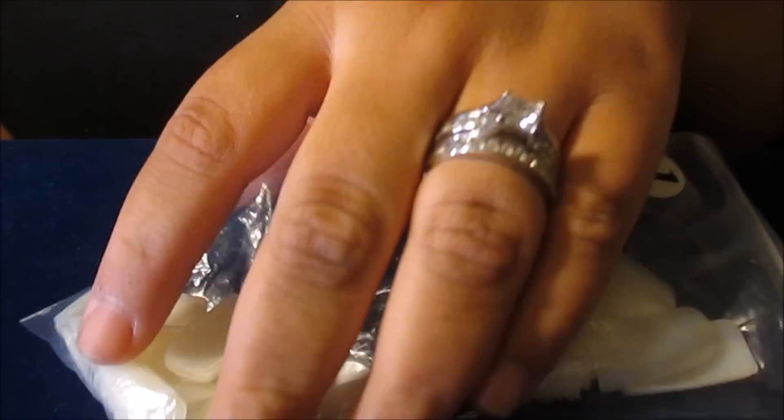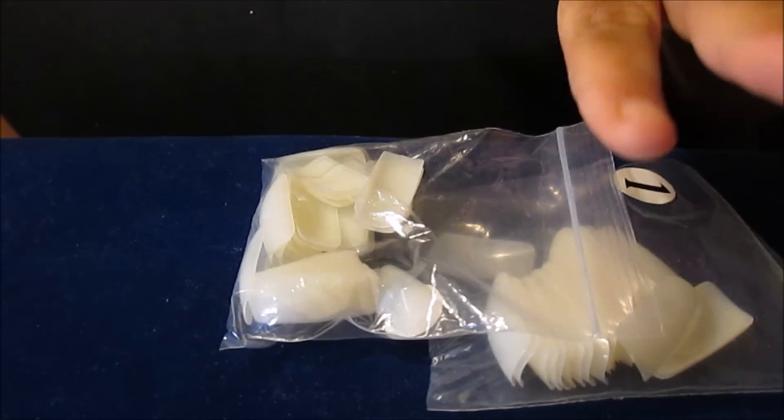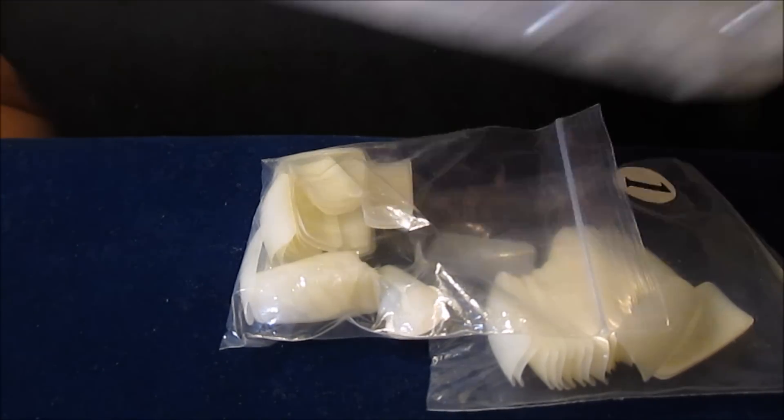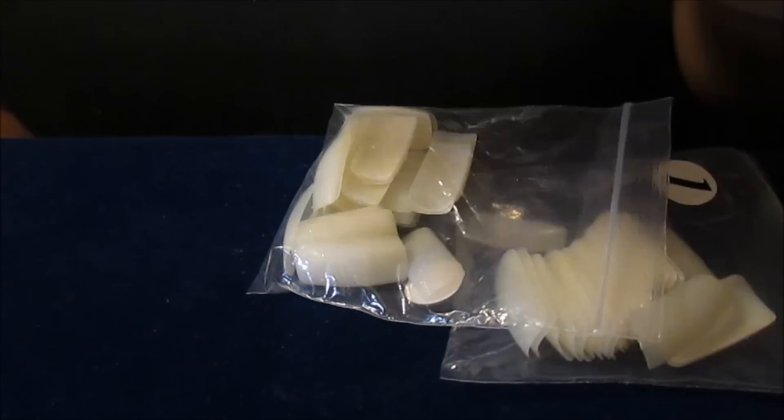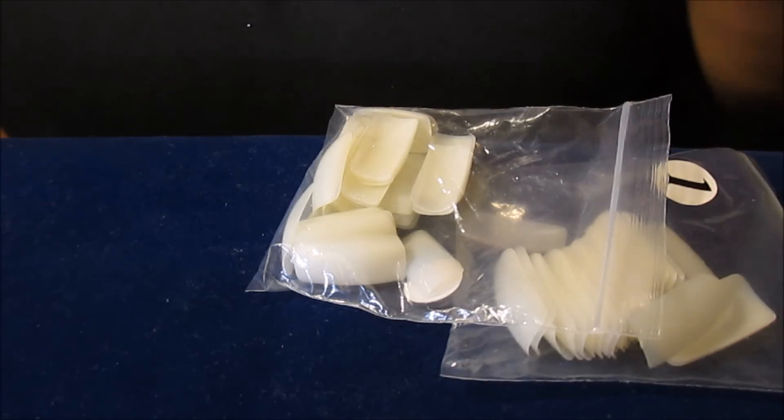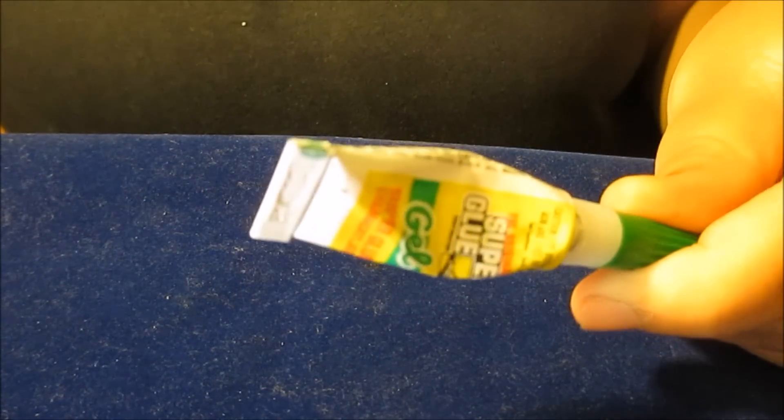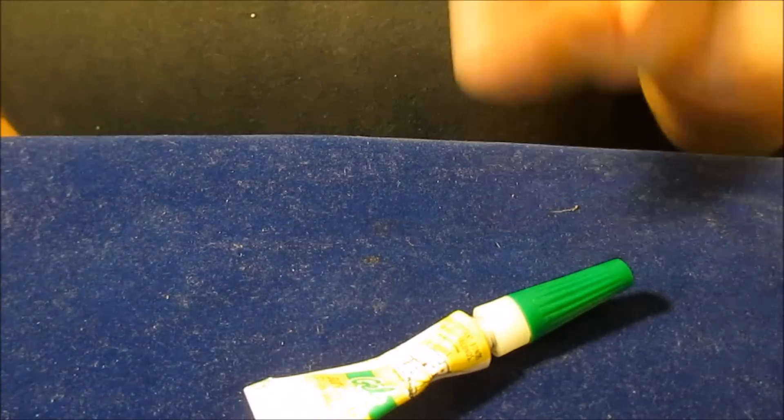They're just the regular shape and you can also get them in clear which I do have clear right here and you can get them in different shapes and sizes. Next what you'll need is your glue. I use super glue. You can use whatever you want. You can use nail glue. Whatever. This is what I use. I get this from Dollar Tree.